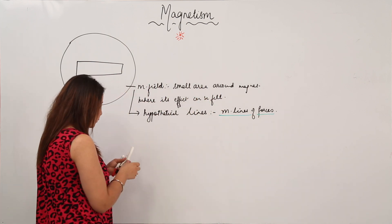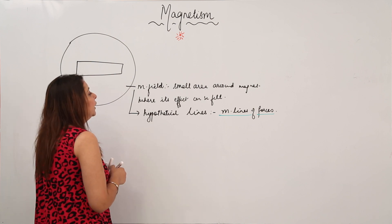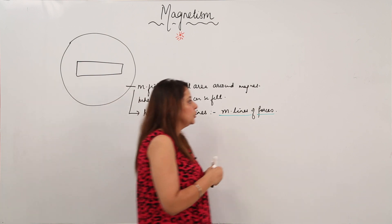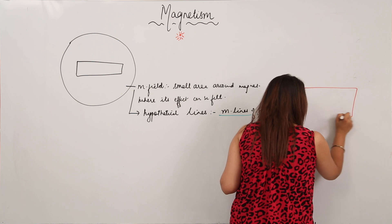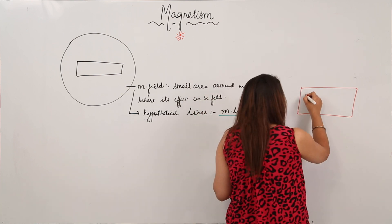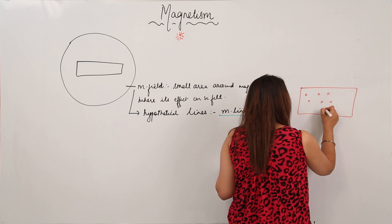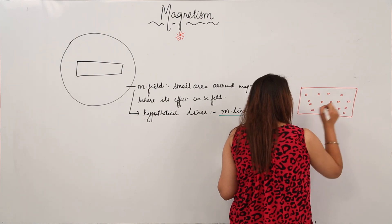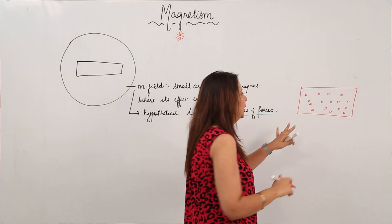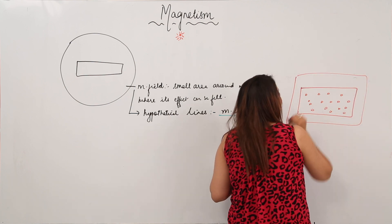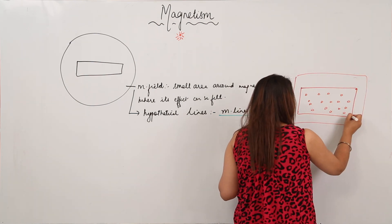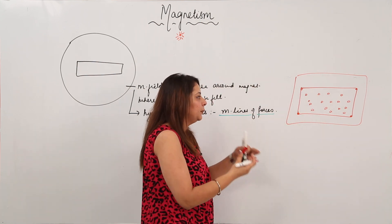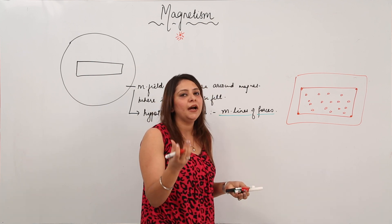I'm going to tell you about the characteristics of magnetic lines and how we can actually observe them. Take a sheet of paper and sprinkle iron filings on it. Now place this paper on a wooden board and pin it down.